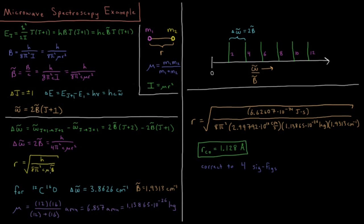Let's say we have carbon monoxide — carbon-12 and oxygen-16; pay attention to the isotopes you're using. The difference between two peaks on our spectrum is 3.8626 wavenumbers, so B̄ is half of that: 1.9313 wavenumbers. Our reduced mass is 12 × 16 over (12 + 16) = 6.857 atomic mass units. Converting to kilograms, we get 1.13865 × 10⁻²⁶ kg.